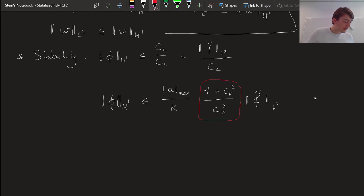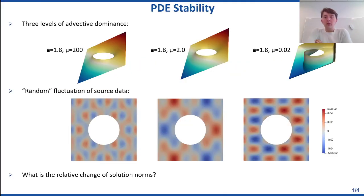So I have some experiments for this. I can show you some pictures. So this is, again, the differential equation that we looked at before, the advection-diffusion equation on a square with a circular hole. And I'm running three types of experiments with different parameters, different ratios between the advection and the diffusion. So we have here the advection A being constant for all experiments at a magnitude of 1.8. And I'm actually lowering the diffusion. So I'm starting with a pretty high diffusion of 200, then we have a moderate one of 2, and we have a small one of 0.02.